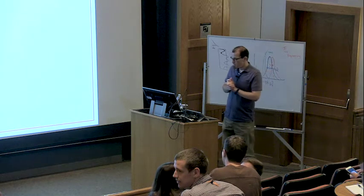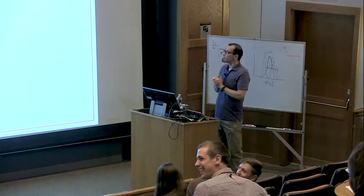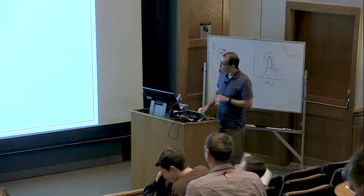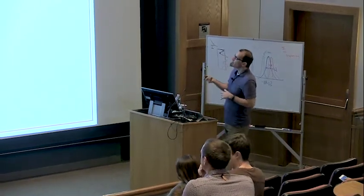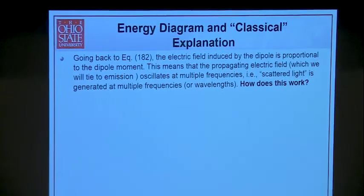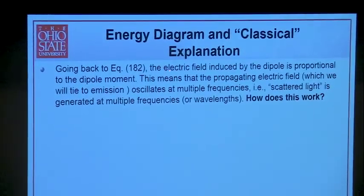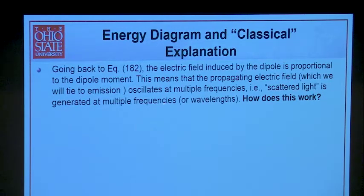We're going to get started for our last hour of the day and finish up this lecture on Rayleigh scattering. Let's try to explain how this works. If we go back, the electric field induced by the dipole is proportional to the dipole moment. This propagating field, which we'll call the emission, is our scattered light. This is oscillating at multiple frequencies.